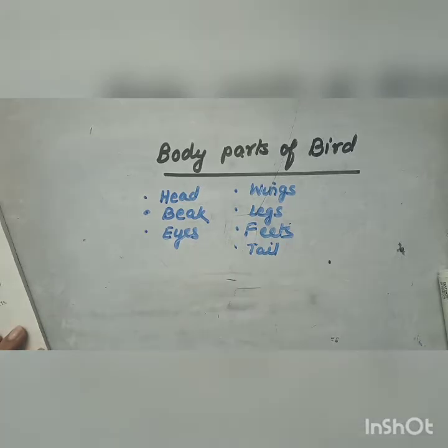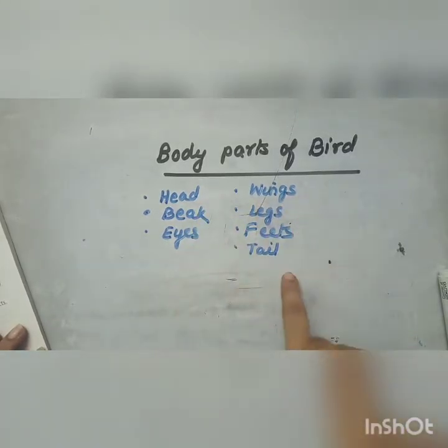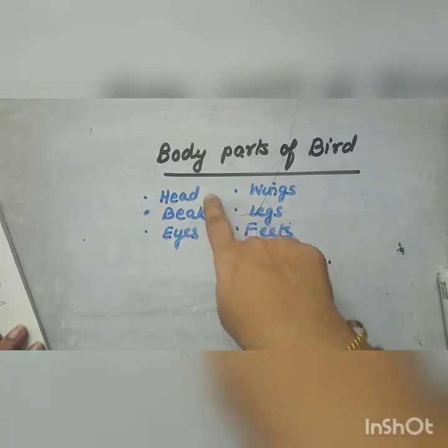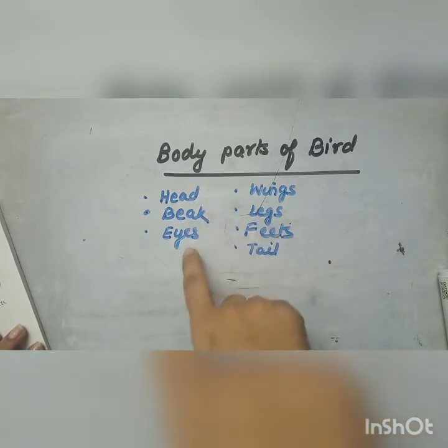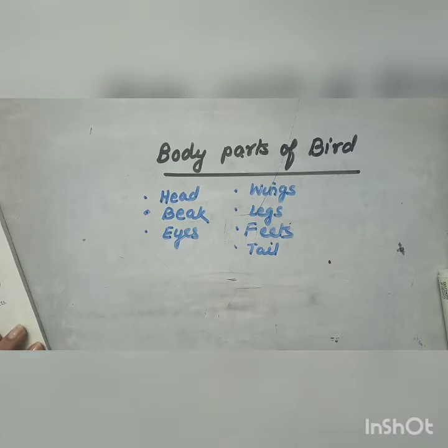So you can see that the body parts of the bird are: head, beak, eyes, wings, legs, feet and tail.